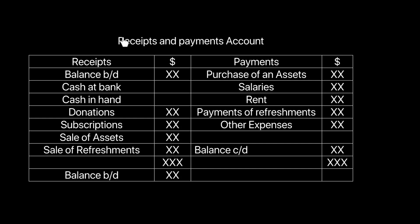The receipt and payment account replaces your bank account, so it essentially looks like the bank account. All receipts go to the debit side and all payments go to the credit side. If you have a positive balance — balance brought down, which could be cash at bank or cash in hand — it will come on the debit side. Any inflows, whether in the form of donations, membership fee, selling an asset, or refreshments from a café, go on the debit side. Any outflows — purchase of assets, salaries, rent, or other expenses — go on the credit side. You then calculate the balance carried down, which also becomes your balance brought down. If there is an overdraft, you should see a balance brought down on the credit side.